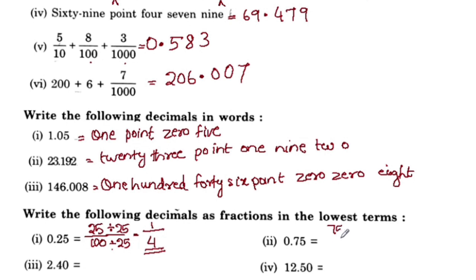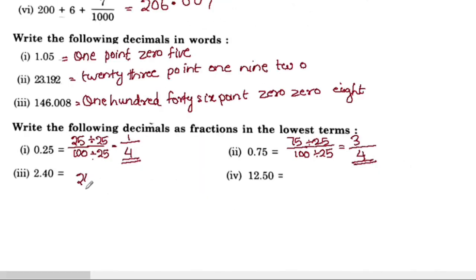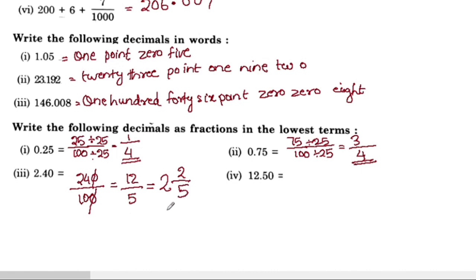Next, 75 by 100. We divide by 25: 75 divided by 25 is 3, and 100 divided by 25 is 4. So 0.75 = 3 by 4. Then 2.40: 240 by 100, we remove the zeros to get 24 by 10. Divide by 2: 24 divided by 2 is 12, and 10 divided by 2 is 5. Mixed fraction: 5 twos are 10, 12 divided by 5 gives 2 remainder 2, so 2 and 2 by 5.